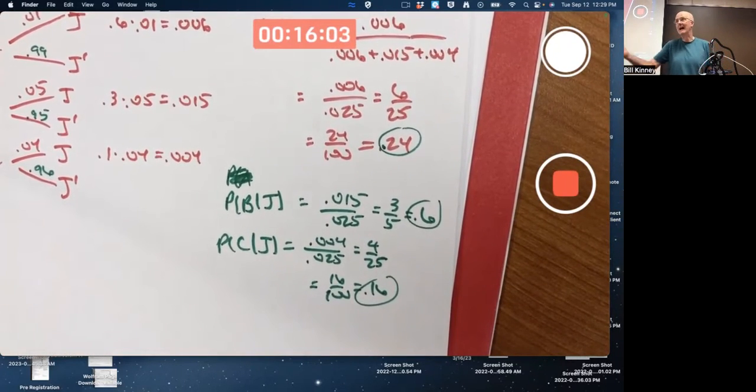And these answers point two four, point six, and point one six do add up to one. If you know it's jammed, it's got to be one of those three printers. That's the cause or where it's jammed. So those are the answers that you should have got.